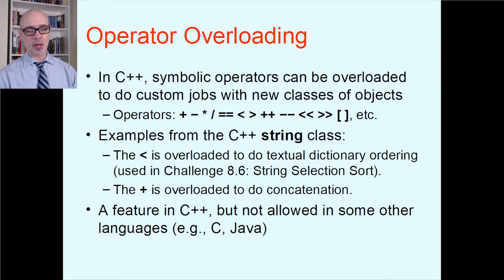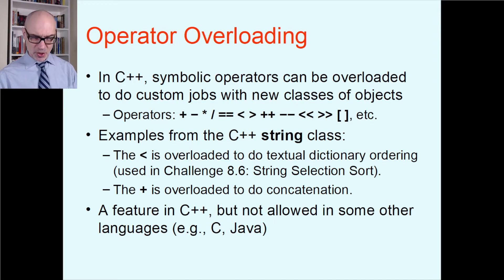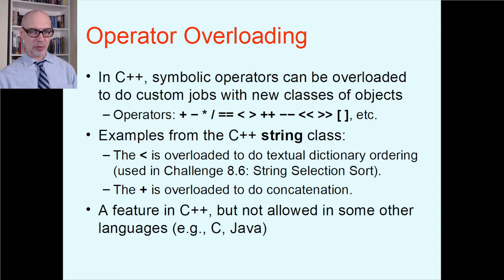In C++, symbolic operators can be overloaded to do new custom jobs with new classes of objects. Some examples of operators: plus, minus, times, divide, the equals sign, relational operators like less than or greater than, the increment and decrement operators, the insertion and extraction arrows, and the array subscript brackets. You can take control of all that and make it do whatever you like.